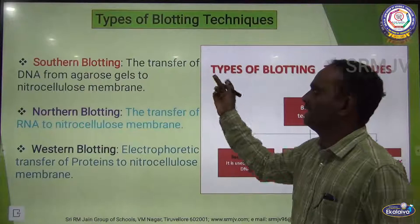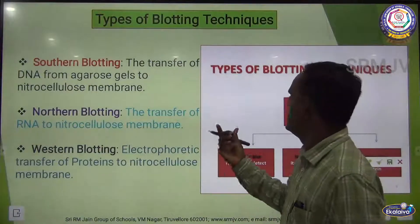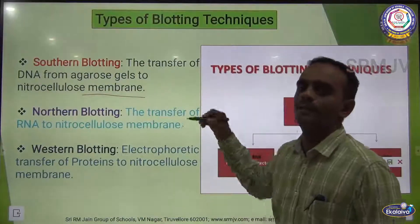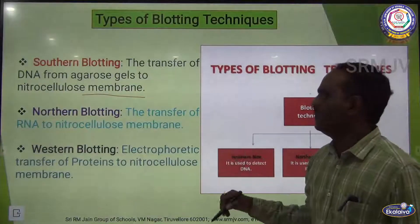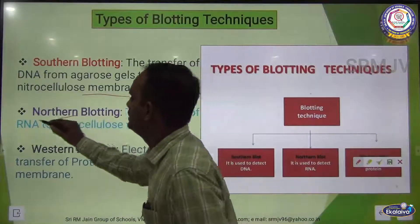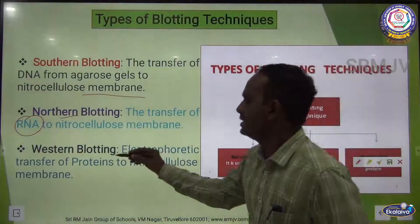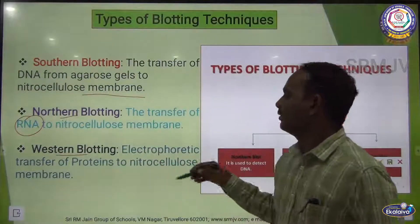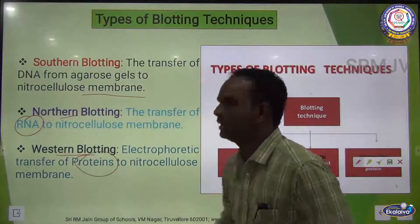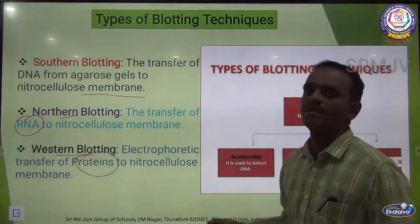In Southern blotting, there is a transfer of DNA from agarose gel to a nitrocellulose membrane. In Northern blotting, there is a transfer of RNA to a nitrocellulose membrane. In Western blotting, there is an electrophoretic transfer of proteins to a nitrocellulose membrane.